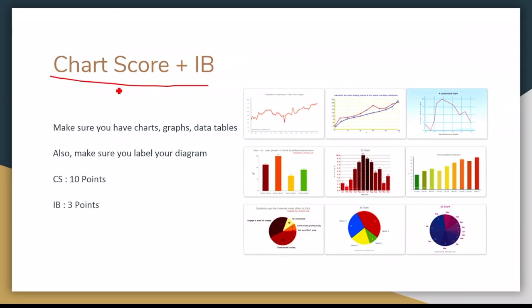And then your chart score and your impound bonus. So your chart score is 10 points, your impound bonus is 3 points. Chart score is basically making graphs, bar graphs, tables, and a diagram of your hovercraft.